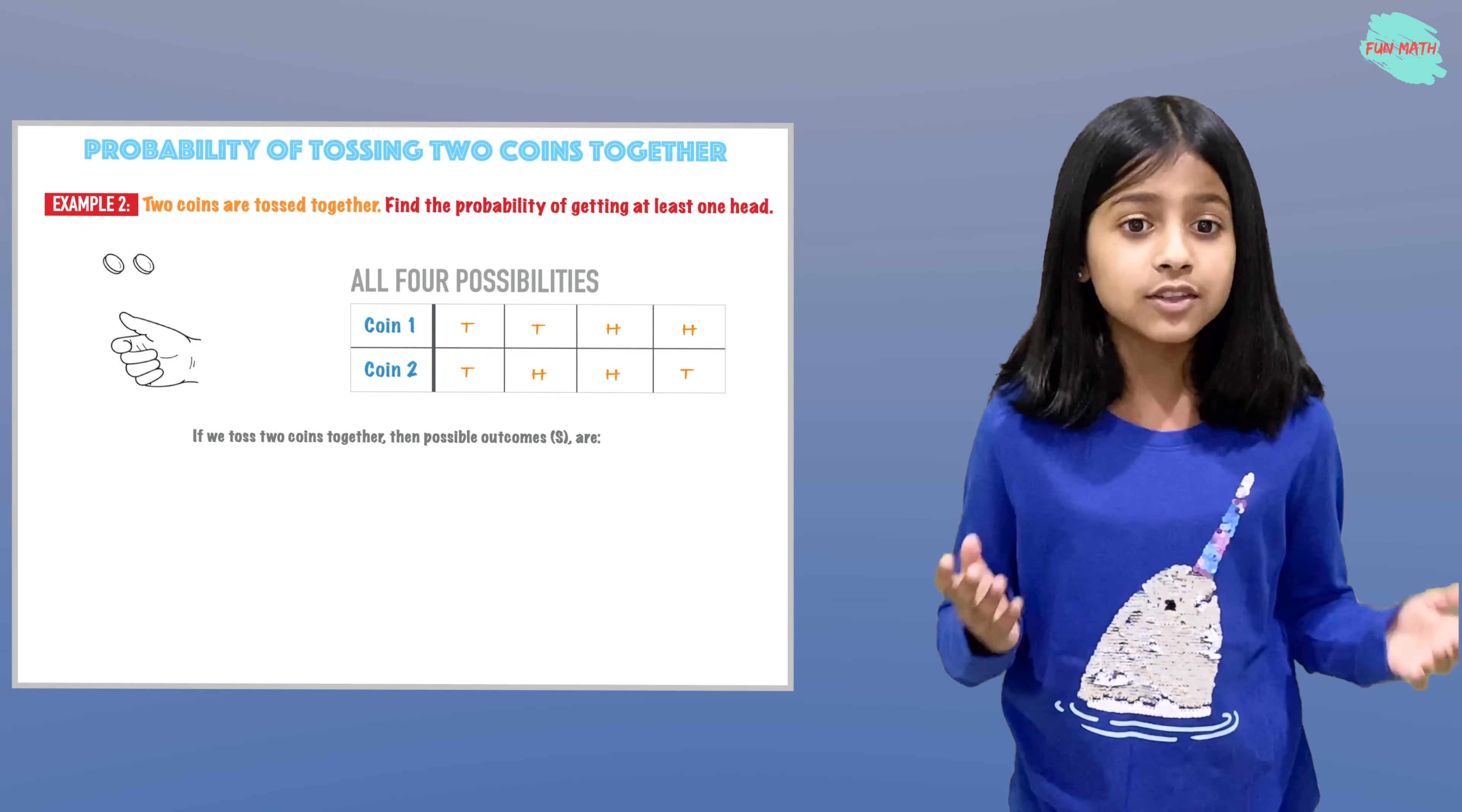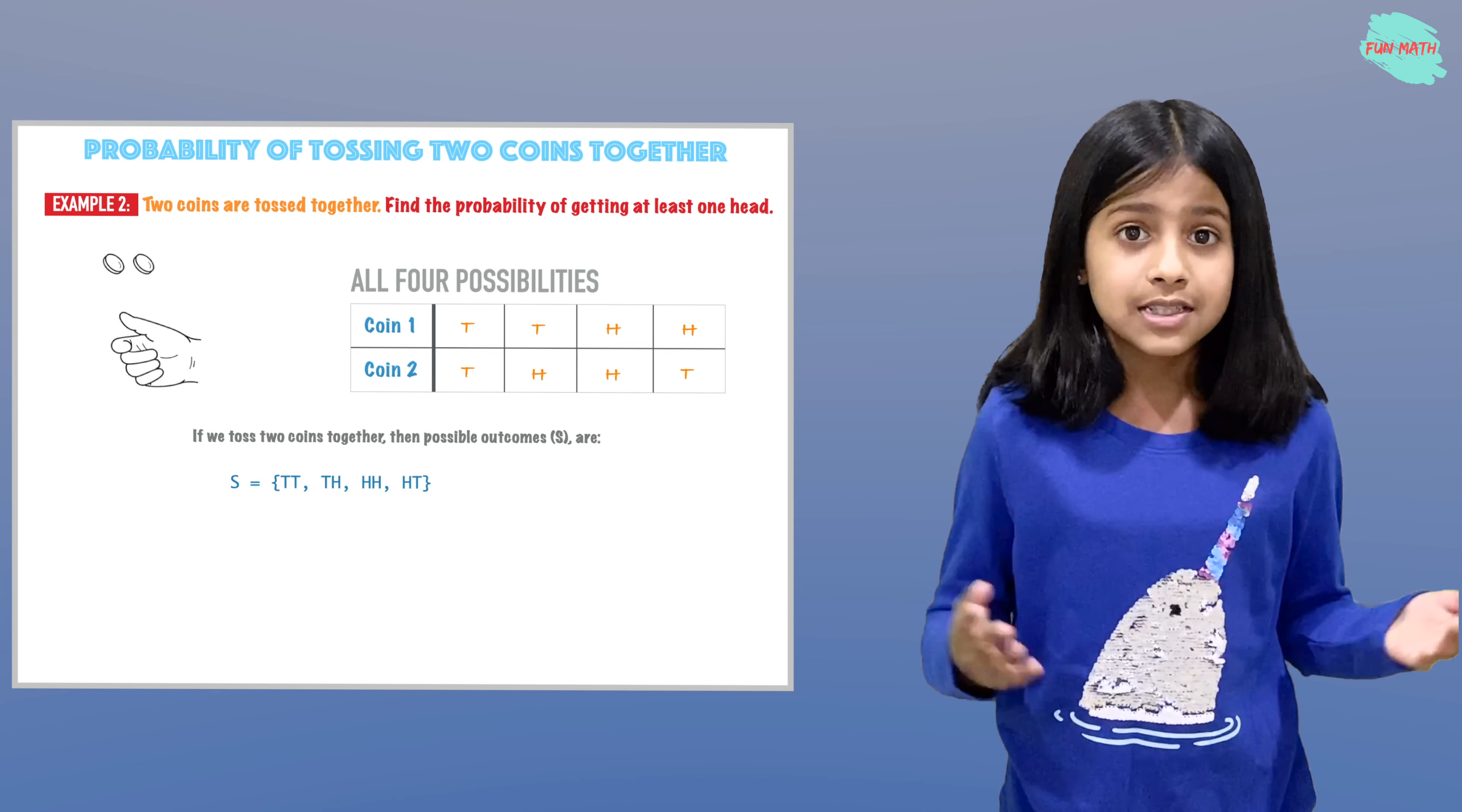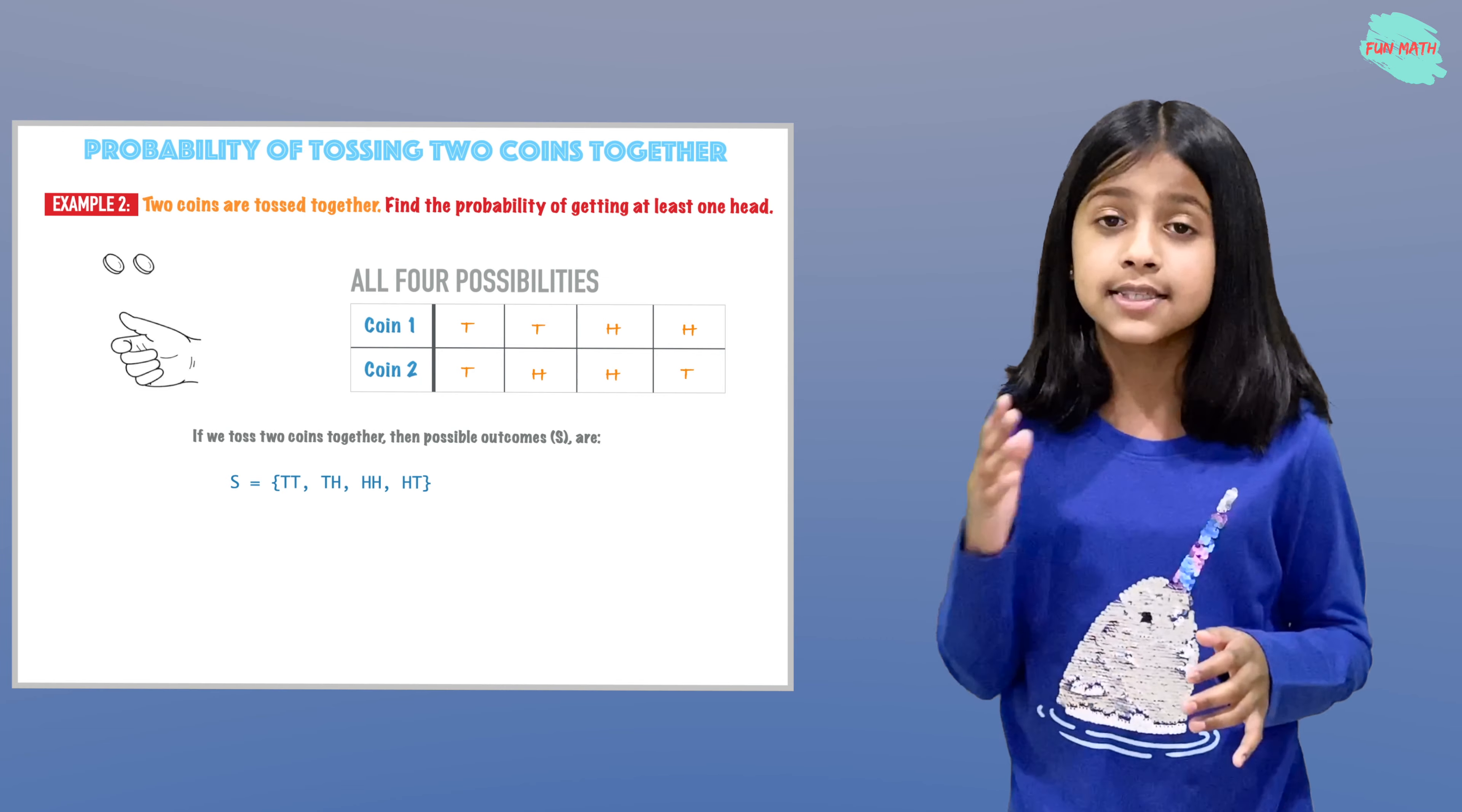So if we toss two coins together, then the possible outcomes, our sample space, is the four possibilities: tails and tails, tails and heads, heads and heads, and heads and tails.